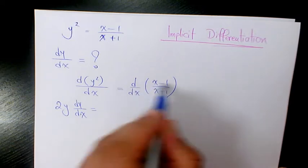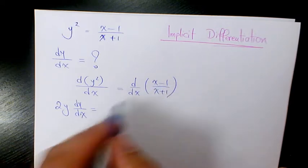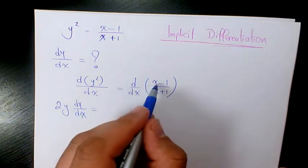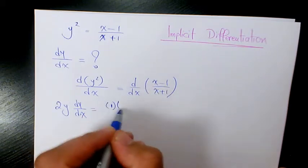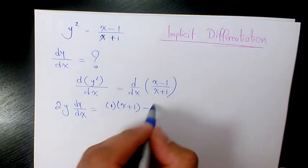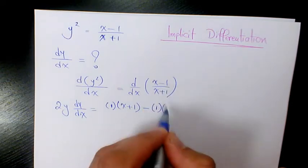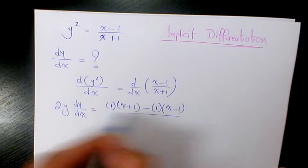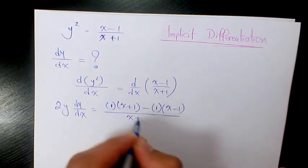The derivative of x minus 1 over x plus 1 with respect to x is: the derivative of x minus 1, which is 1, times the denominator x plus 1, minus the derivative of the denominator, which is 1, times the numerator x minus 1, all over the denominator squared, x plus 1 squared.